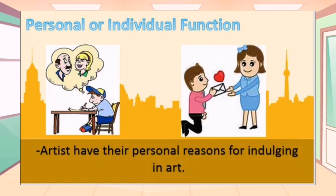Another example of personal or individual function: the guy with the pink polo wrote a poem for his girlfriend, and the other guy is also writing a poem for his parent. Their form of art is the same — they are both writing a poem — but their feelings are different. The first guy with the pink polo is happy and in love, while the guy with the blue shirt is sad and alone. So, whatever your feelings are, whether you're happy, in love, sad, or desperate, you can still indulge yourself in art.